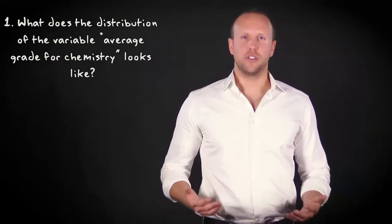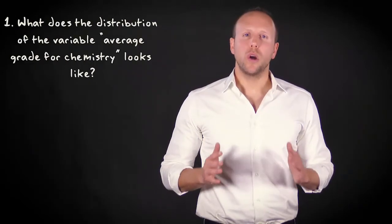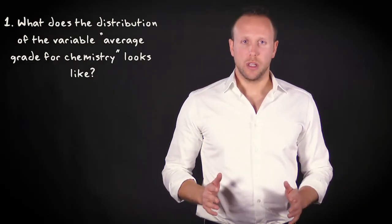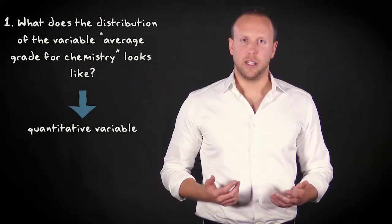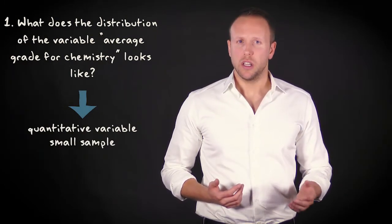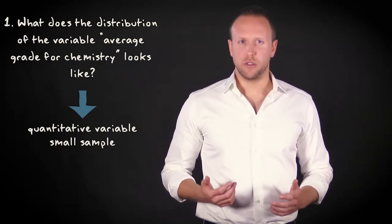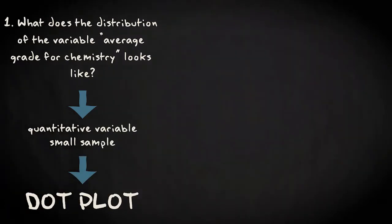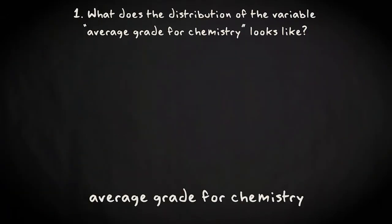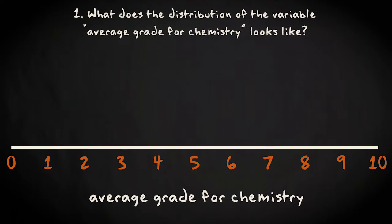Let's start with the first question. You want to know what the distribution looks like. We're dealing with a quantitative variable here, and a small sample size. So the best way to display the distribution is with a dotplot. The possible grades range from zero to ten. So you mark these values on the horizontal line of your dotplot.